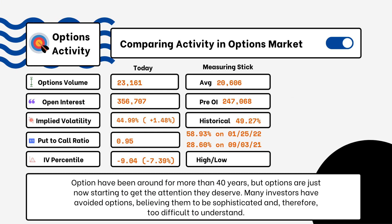We've provided details on today's option activity. What you'll be able to see here is options volume, open interest, implied volatility, put-to-call ratio, and IV percentile. One of the most popular indicators for traders is the put-to-call ratio.